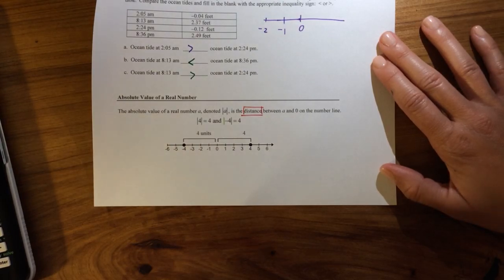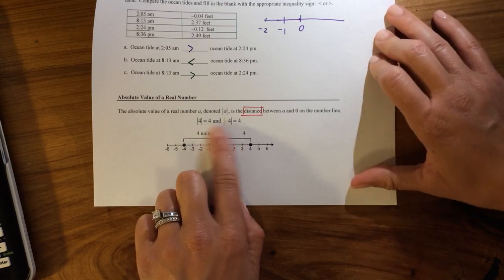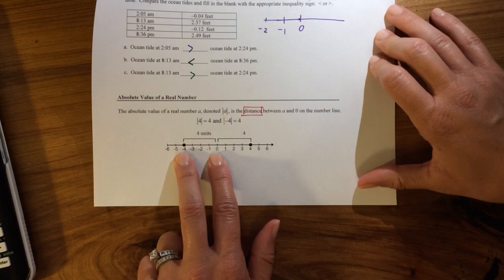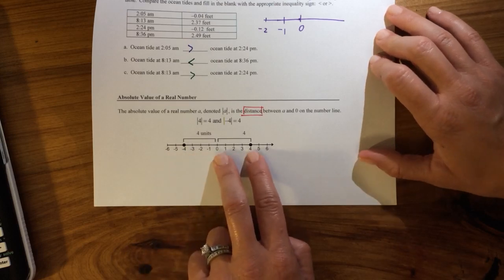So that's why it can be positive 4 or the negative 4, because I am 4 units away from 0 on the left, and I'm 4 units away from 0 on the right.